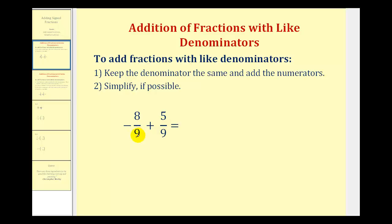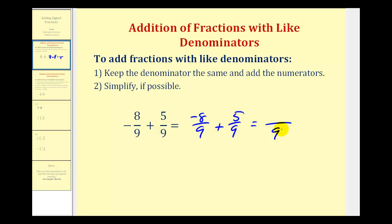So for negative eight-ninths plus five-ninths, notice how we have a common denominator. I usually rewrite this so that the negative is in the numerator: negative eight over nine plus five over nine. We have a common denominator, so the denominator stays the same, and we add the numerators. Negative eight plus five is equal to negative three, so the sum is negative three-ninths.